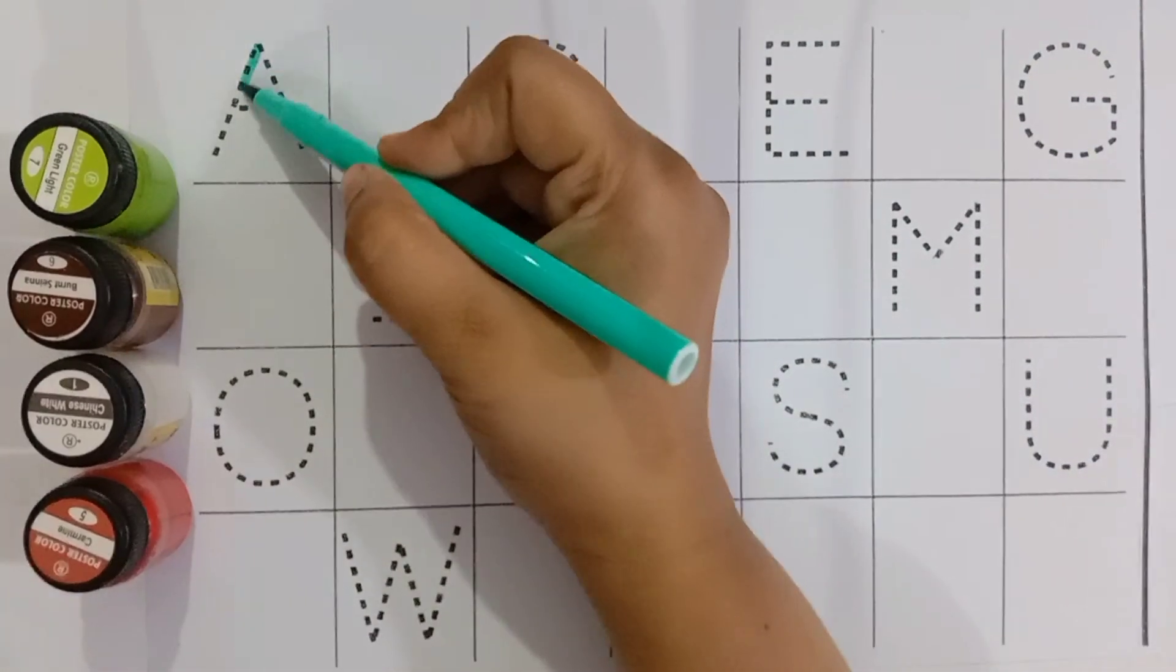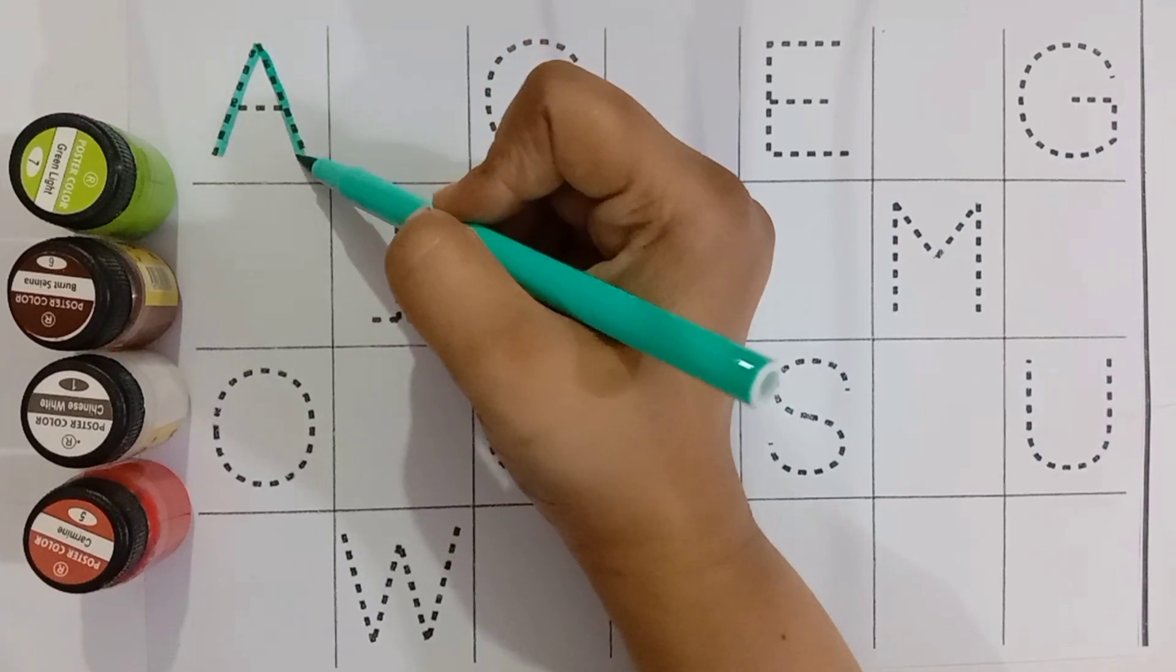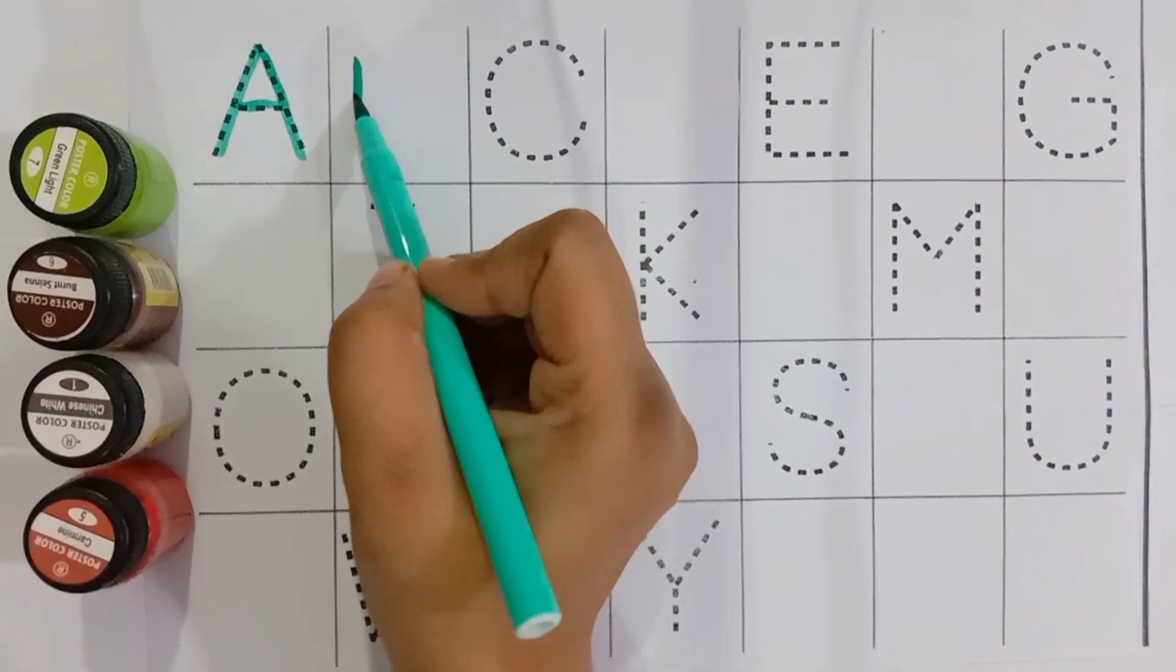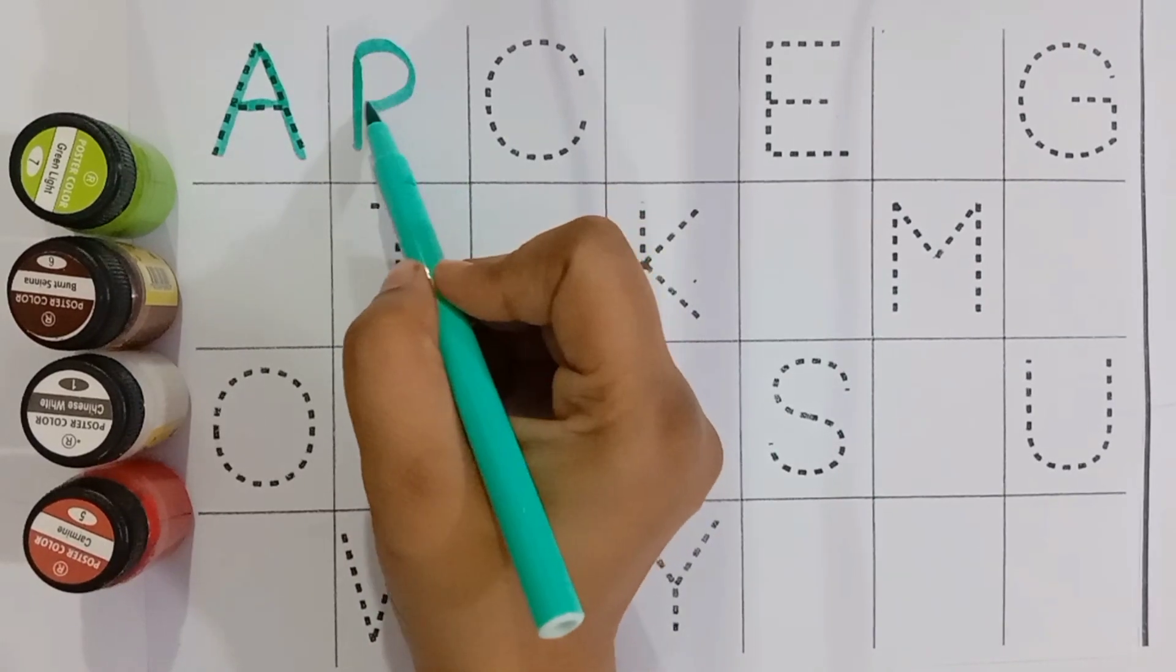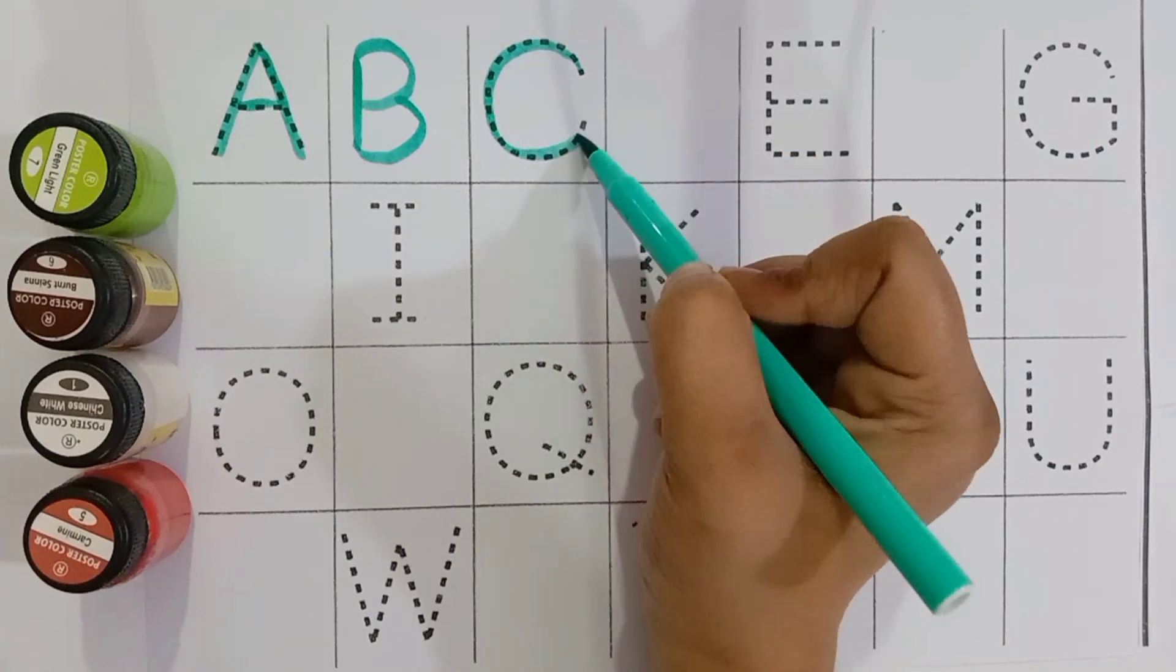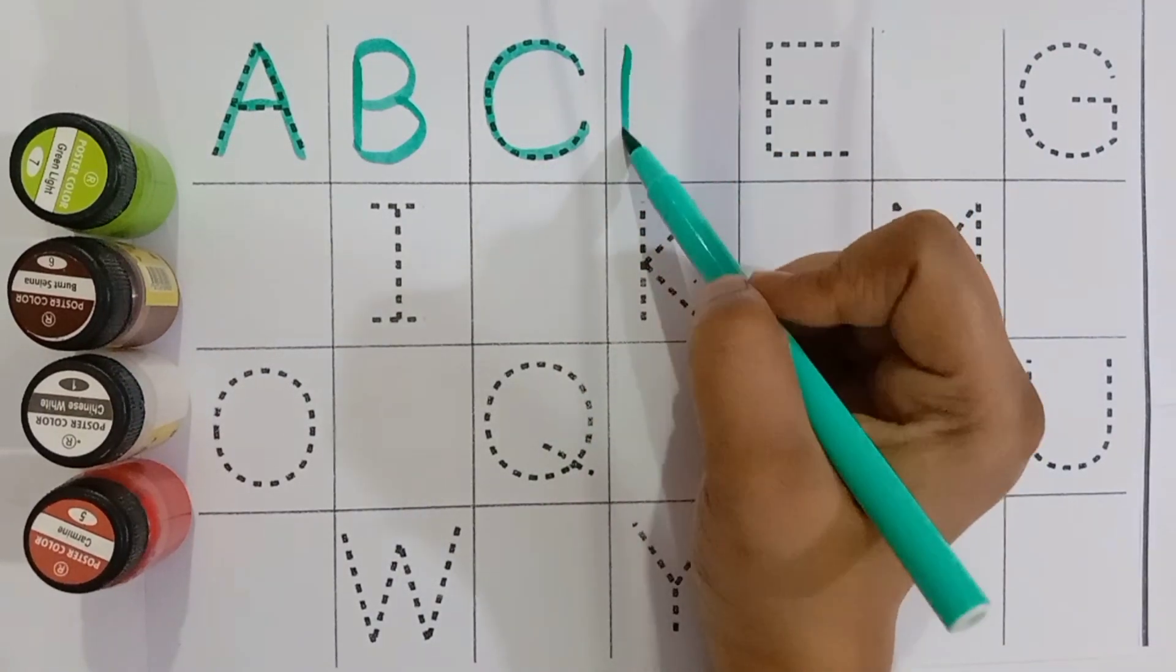A. A for apple. A for apple. B. B for banana. C. C for cow.